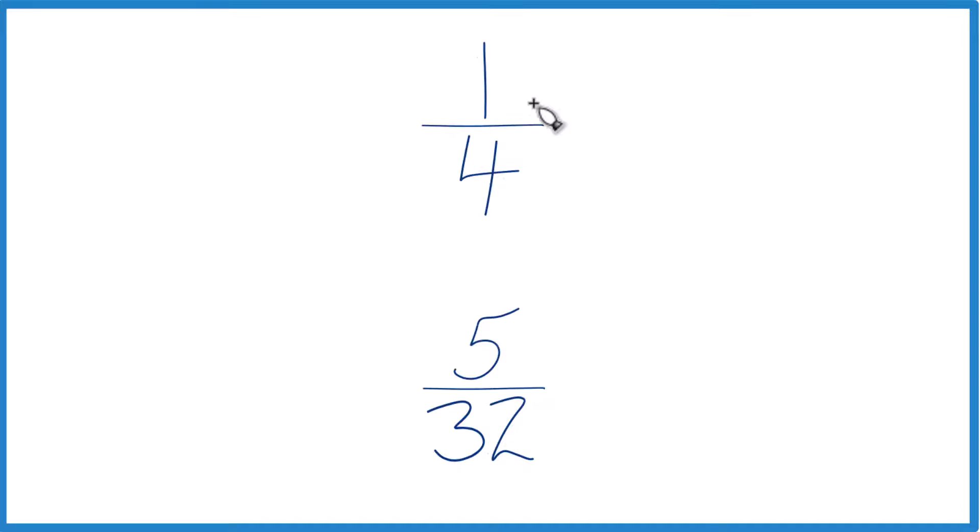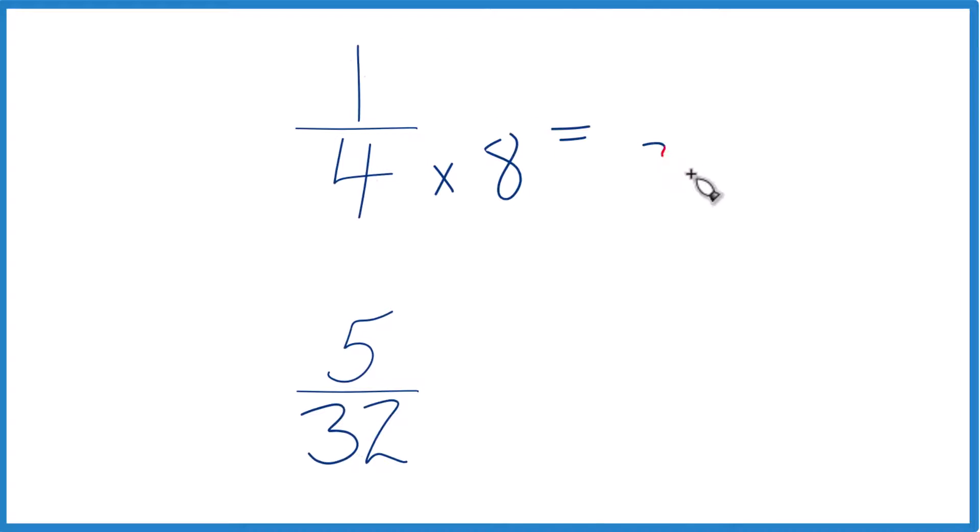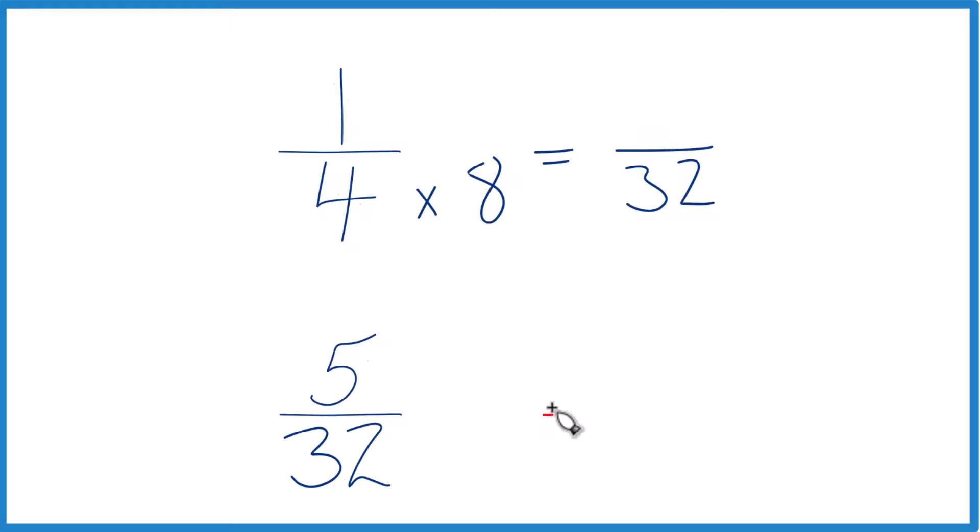So I know that 4 goes into 32 8 times, so I'm going to multiply 4 times 8, because that's going to equal 32. Down here I already have 32, so let's just call that 5 32nds. We won't change anything there.